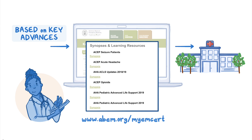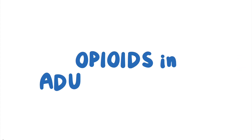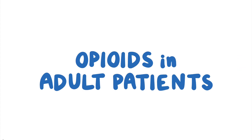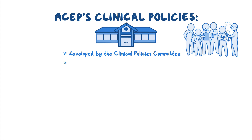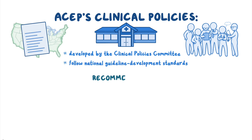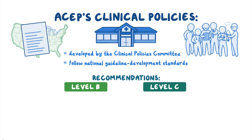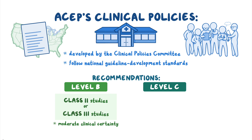Now let's take a closer look at the key advance based on ACEP's clinical policy recommendation for critical issues related to opioids in adult patients presenting to the emergency department. ACEP clinical policies are developed by their clinical policies committee, guided by processes in accordance with national guideline development standards. Recommendations in this clinical policy follow Level B and C criteria. Level B recommendations are strategies with moderate clinical certainty using evidence from one or more Class 2 studies or strong consensus from Class 3 studies. Level C recommendations are based on Class 3 studies or expert consensus. Please go to ACEP's website for more detail on these recommendations.